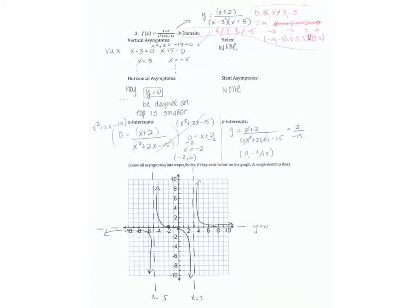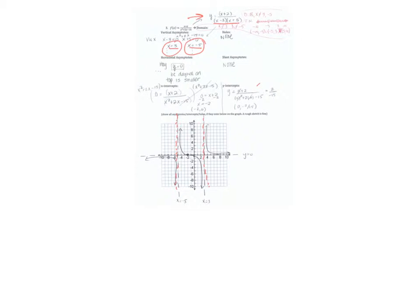For this next one, vertical asymptotes, we first factor our problem. So, x minus 3, x plus 5 in the denominator. We set each factor equal to 0, so we get 3 and negative 5. We know those are both vertical asymptotes and not points of discontinuity, because the factors don't cancel. So, we draw those vertical asymptotes at negative 5 and 3.